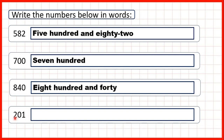And finally, we can see that for this number, we have a two as our hundreds digit, so we write two hundred. Then, after the hundreds digit, we have a zero and a one — so that's a zero as our tens digit — giving us two hundred and one.